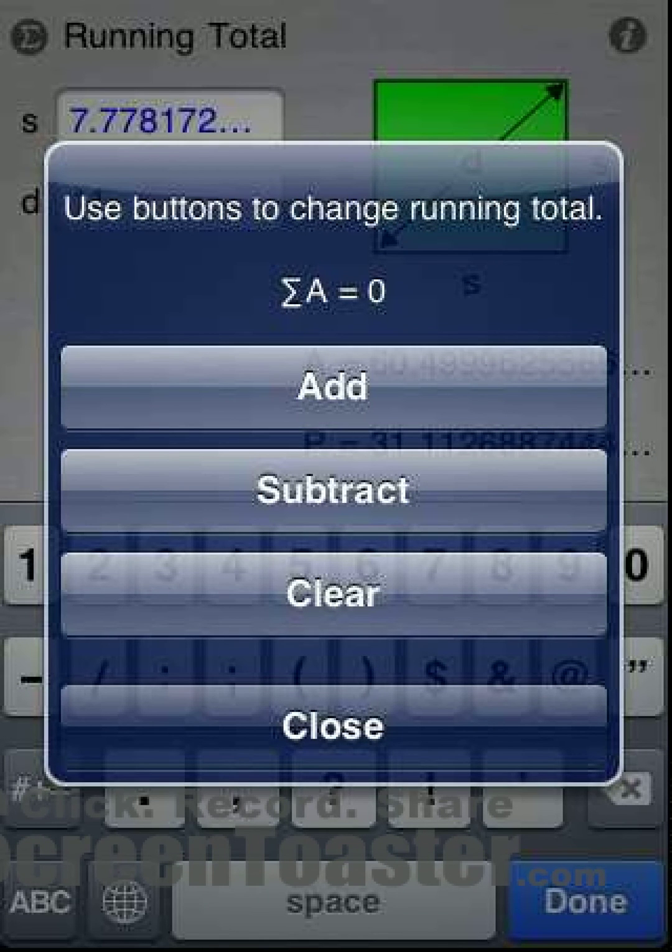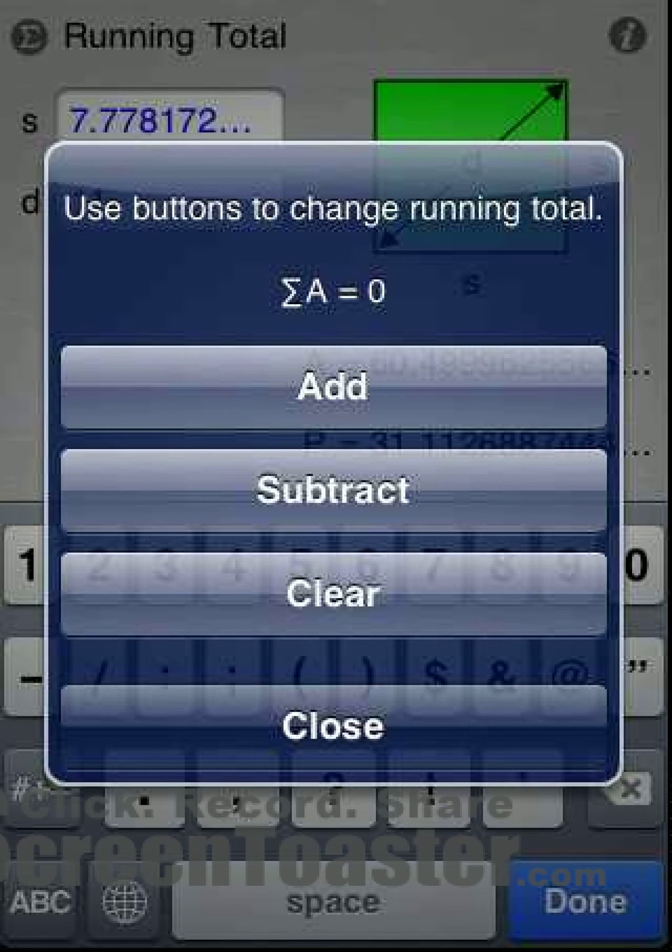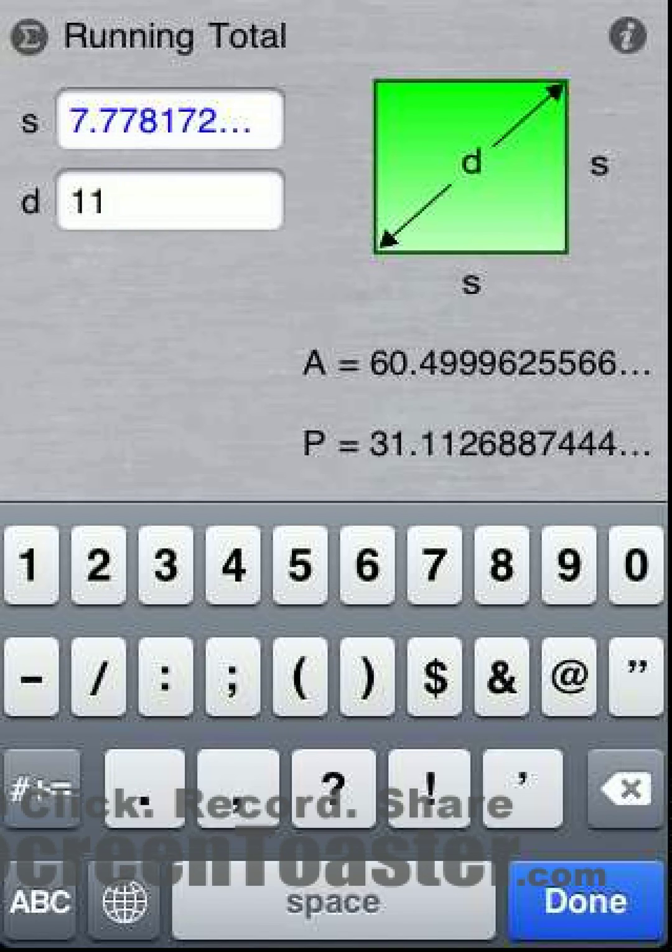To clear the running total, press clear. To exit, press close. Other shapes work the same way.